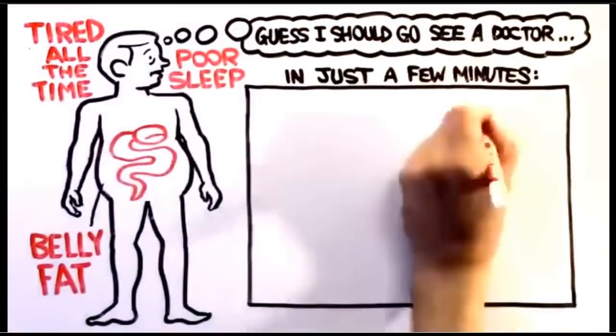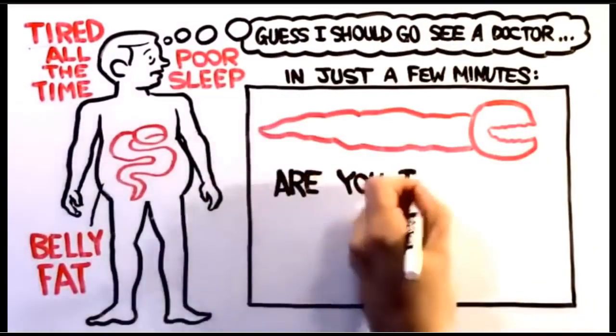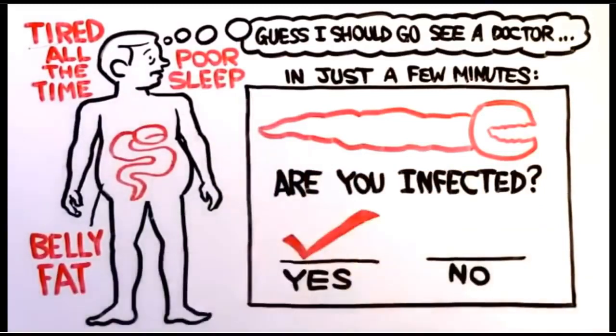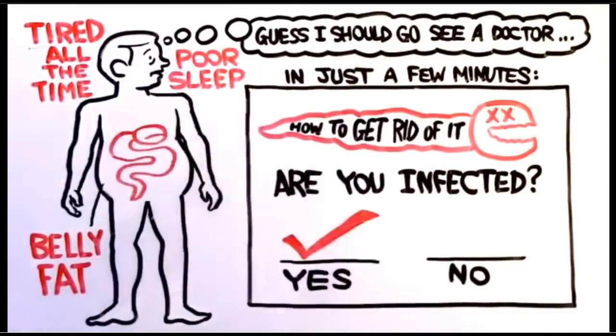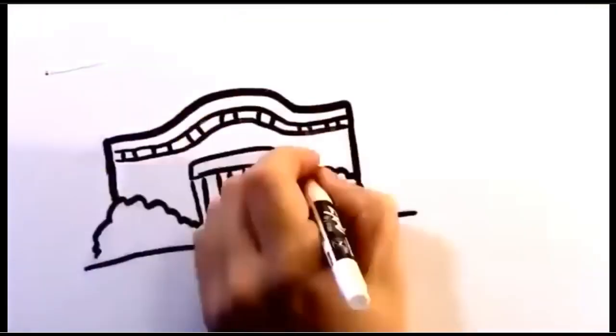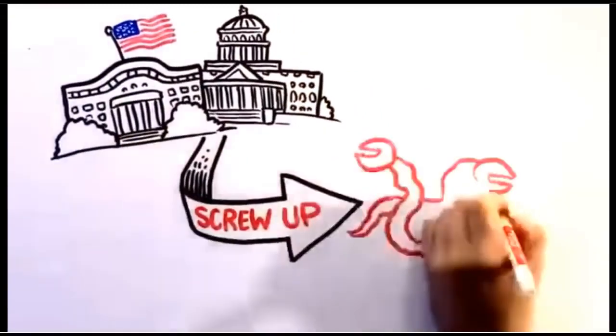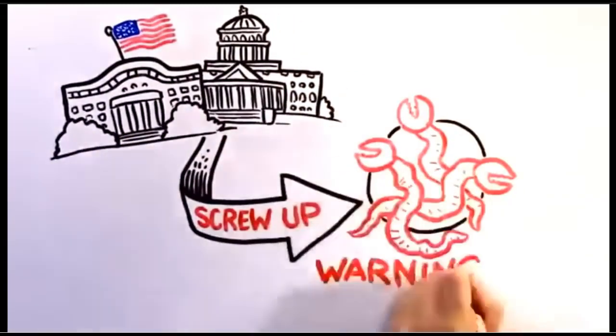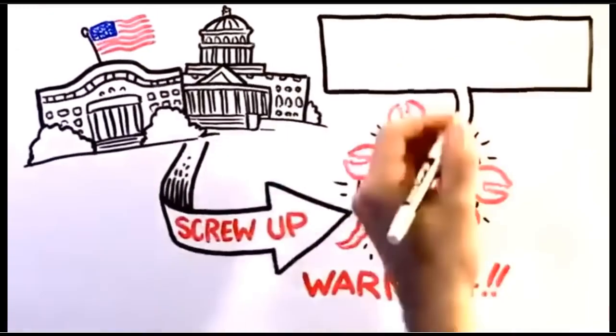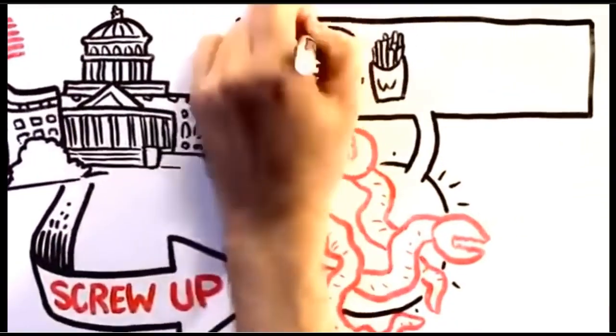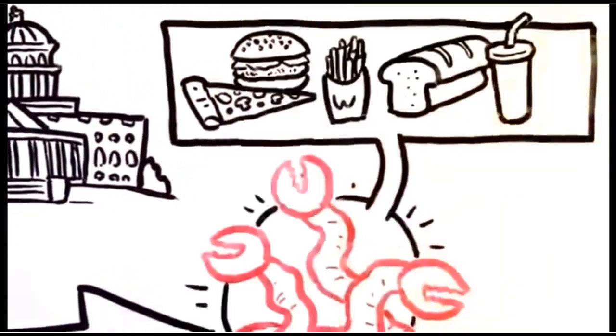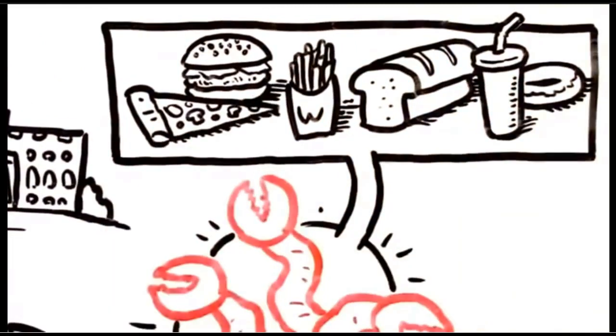In the next few minutes, I'm going to show you a simple test you can do to find out whether or not you've been infected, and if so, how to get rid of it before it causes potentially irreversible damage. I'm also going to expose the major government screw-up that allowed this to happen, and how they are now scrambling to fix it. Warning, the information I'm about to share with you is controversial because this parasite comes from the most unlikely place, your food supply.